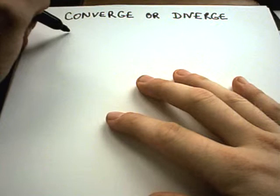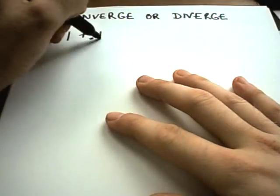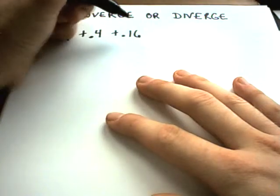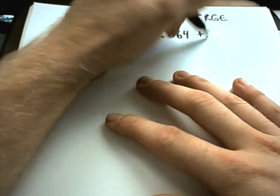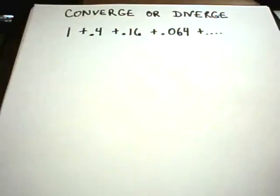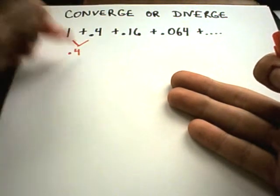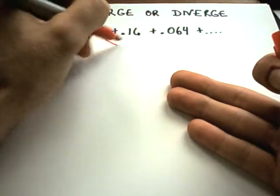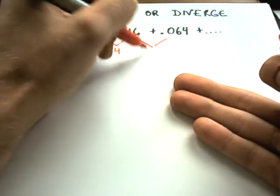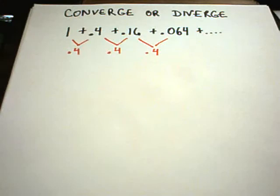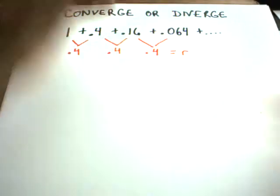So suppose my first series is 1 plus 0.4 plus 0.16 plus 0.064. We'll assume this pattern continues. Notice the number I'm multiplying by - it's pretty easy to spot on the first one. It looks like I'm multiplying by 0.4. And notice if I multiply 0.4 by 0.4, again I'll get 0.16. I'm multiplying 0.16 by 0.4, I'm going to get 0.064. So this 0.4 is going to be my common ratio r.